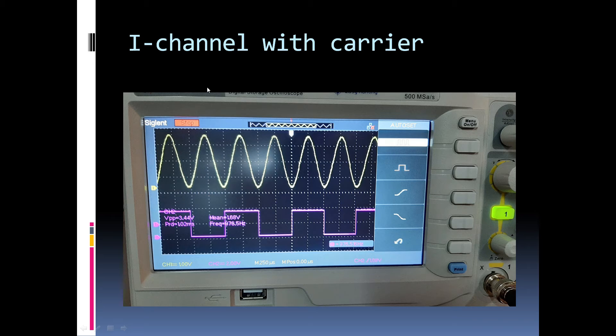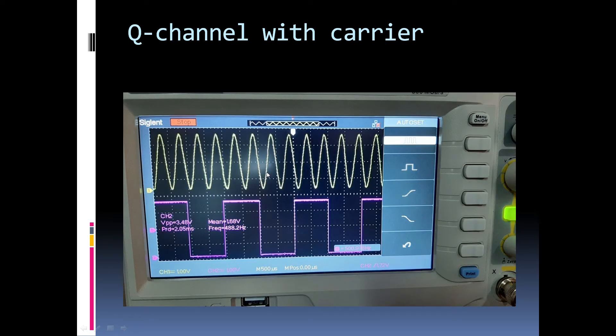Now, here is how the I channel data looks like along with the cosine carrier. And in this slide, we can see the Q channel data along with the sinusoid carrier.